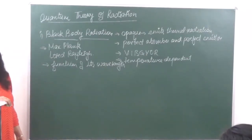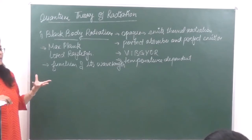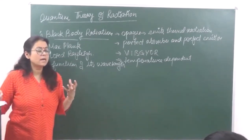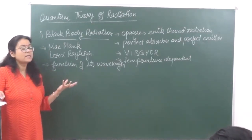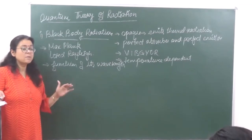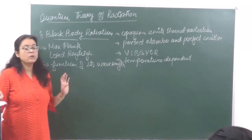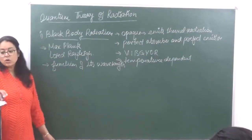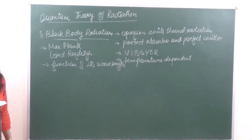For example, if we are heating an iron bar, initially the iron bar will start appearing red. We further increase the temperature, it starts appearing orange. On further increase, it starts appearing blue. Blue is the maximum intensity. After that, even if you keep increasing the temperature, there is no change. Blue and white — ultimately they appear to us as white.